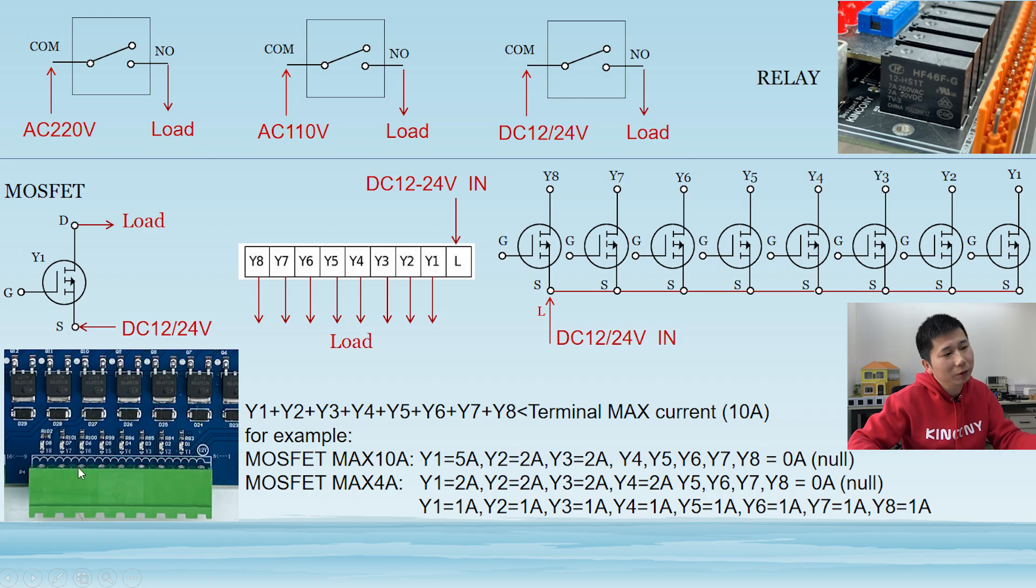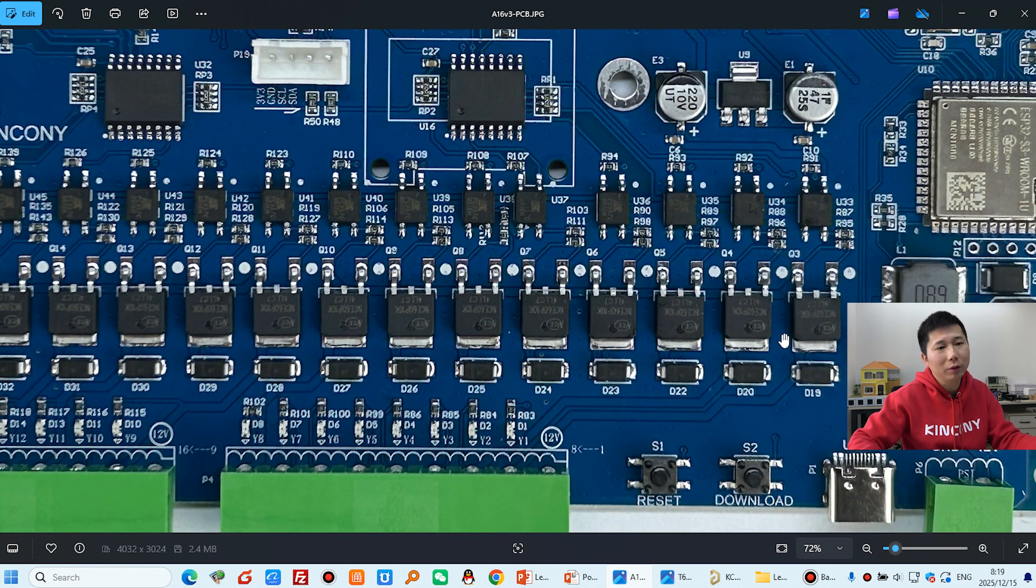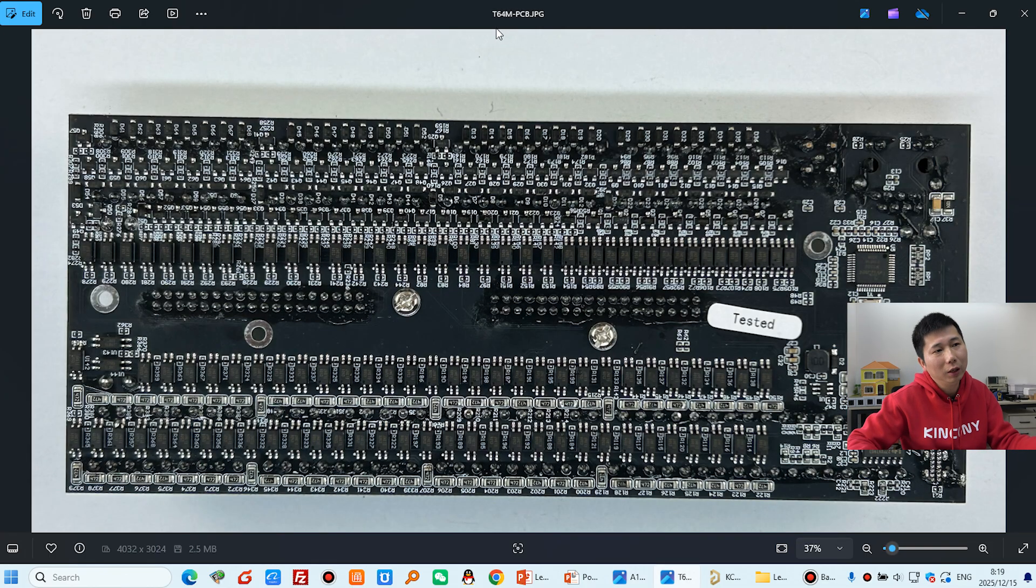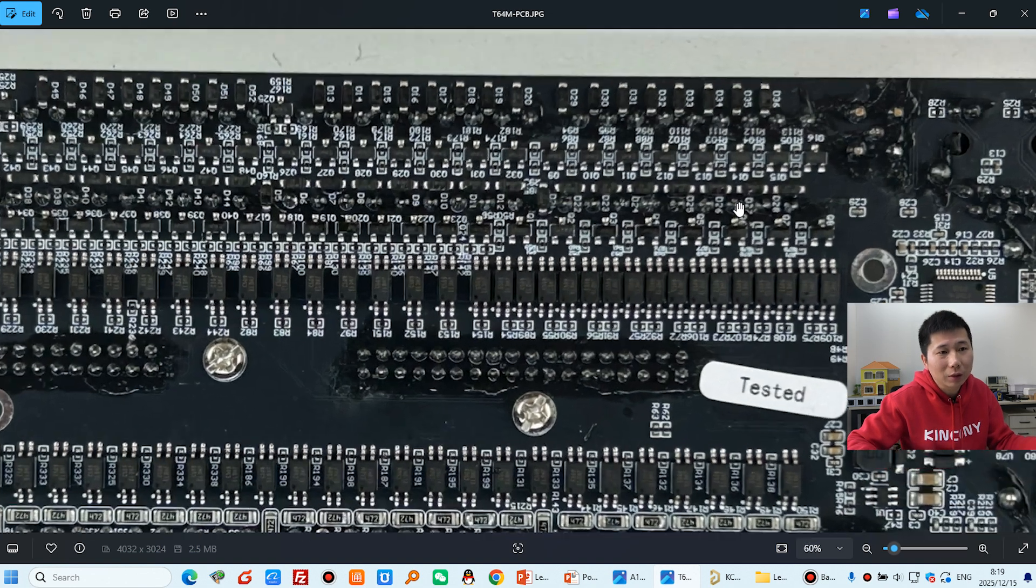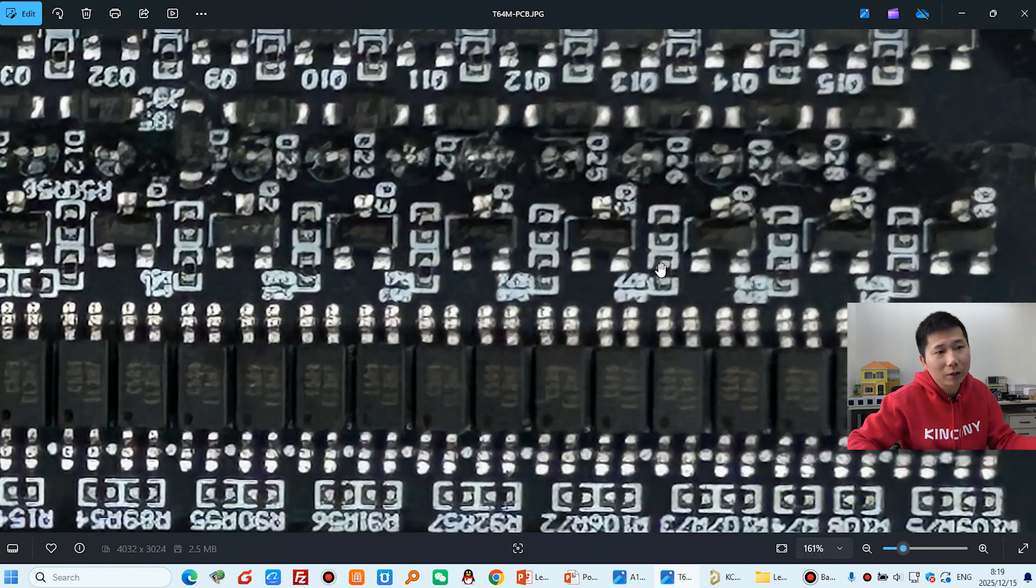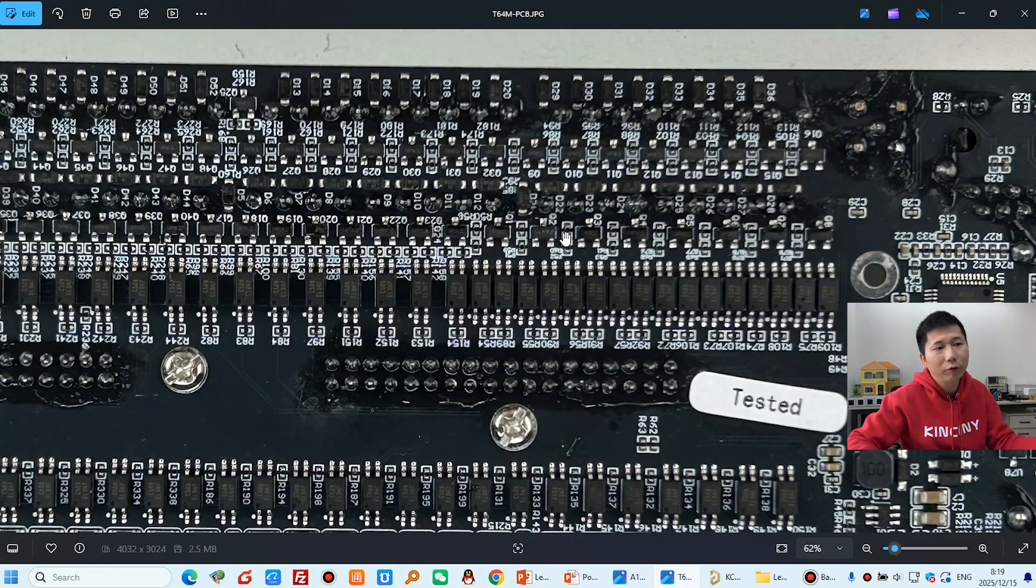Because, King Kong use this green terminal, that have a max 10A. So, you just, less than 10A. You can see, for example, this MOSFET, have 10A version. And, another MOSFET, have 4A version. So, you can see, if you, A16V2, that is 10A, MOSFET, max 10A. And, you can see, this is, T64, and T32, and T16M, and T1028M, that board, use this small MOSFET.